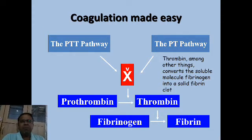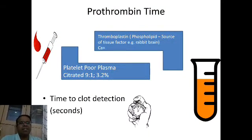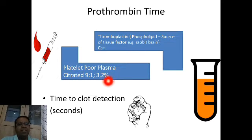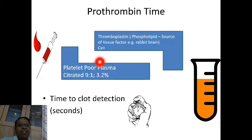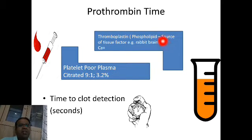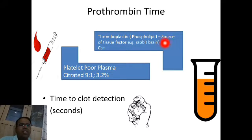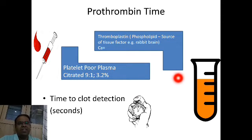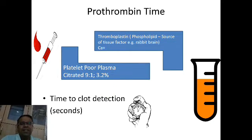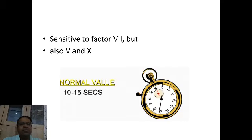In this podcast let us see some of the intricacies of prothrombin time. Basically what we do is take the patient's blood in 3.2% citrate in the ratio of 9:1 — that is 9 parts of blood and 1 part of anticoagulant. The laboratory centrifuges this blood to prepare platelet-poor plasma, and 100 microliters of this is added into the prothrombin time reagent, which is tissue thromboplastin or phospholipid — the source of which can be tissue factor from rabbit brain — and calcium. A stopwatch is started, and the time for clot detection in seconds is the prothrombin time.